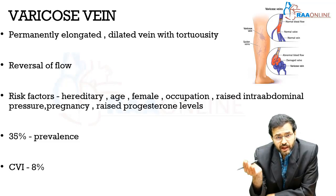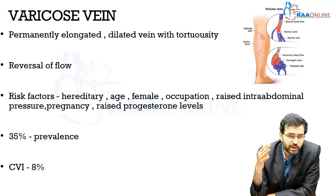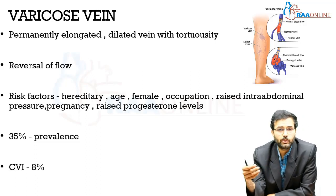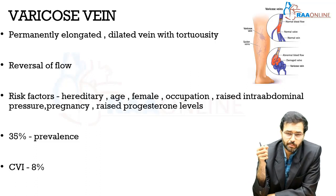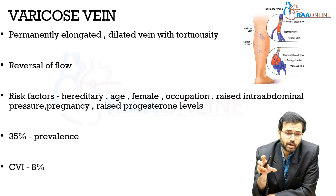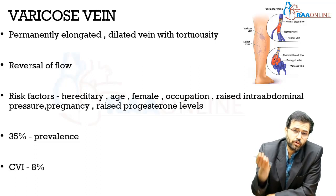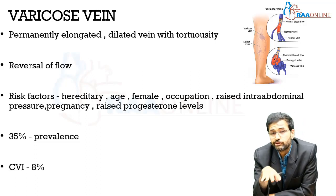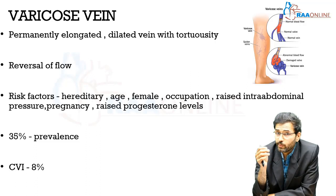When you have a rise in intra-abdominal pressure, venous return decreases because the pressure difference between the thorax, abdomen, and lower limb vessels is altered. The pressure gradient is what draws blood up, so when intra-abdominal pressure is raised, the flow of blood from the lower limb into the abdomen decreases. As a result, more and more blood tends to stay within the superficial veins of the lower limb, causing varicose veins.